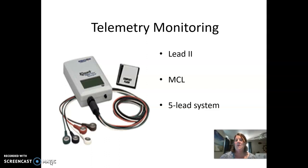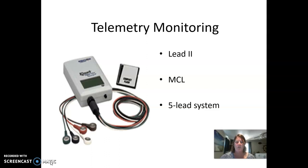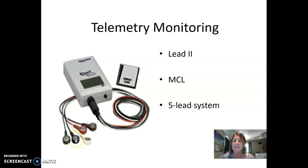When we monitor, there are multiple different leads we can monitor in, but the most common monitoring leads are lead two and MCL, which is modified chest lead one. There are three and five lead systems. You will see a monitoring box which will transmit with leads attached to it. You put electrodes on the chest, attach the leads to the electrodes, and this transmitter box will transmit that pattern up to the front desk or main monitor so people can look at it and take strips off of it.